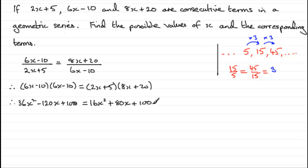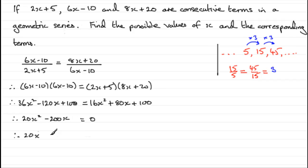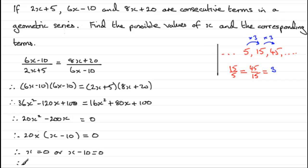So we've got a quadratic equation now, which we need to make equal to 0. We take away 16x squared from both sides: 36x squared minus 16x squared is 20x squared. Then minus 120x minus 80x gives minus 200x. The 100s cancel out, leaving 20x squared minus 200x equals 0. We can factor out 20x, leaving us with 20x times (x minus 10) equals 0. So either x equals 0, or x minus 10 equals 0, giving x equals 10.